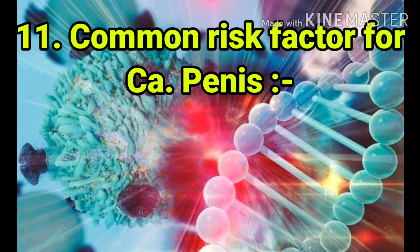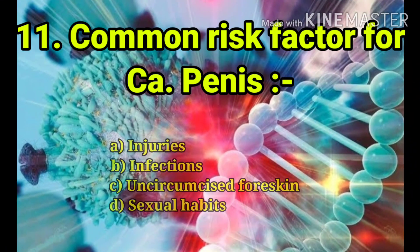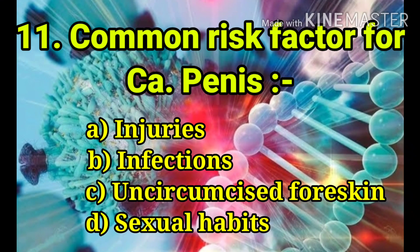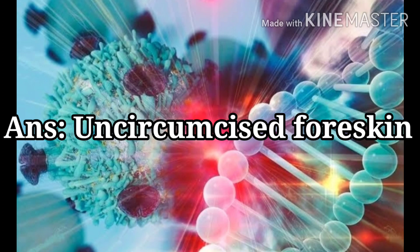The next question: common risk factor for CA penis. The options are injuries, infections, uncircumcised foreskin, and sexual habits. The answer is uncircumcised foreskin.